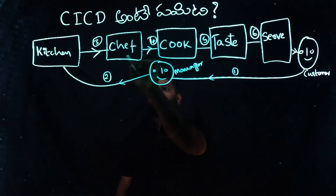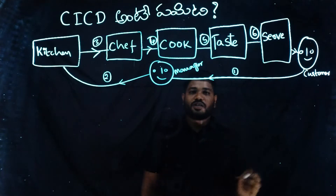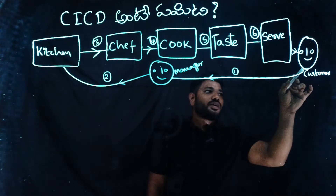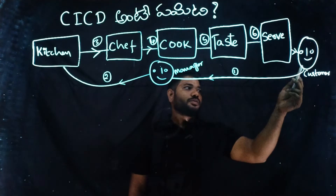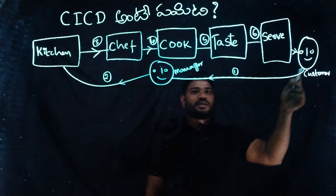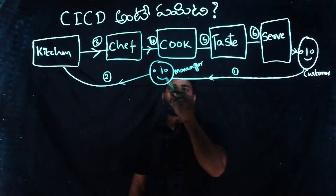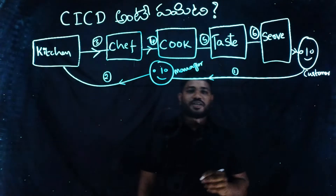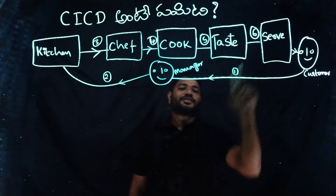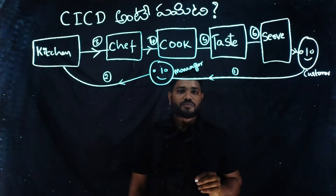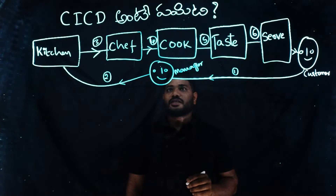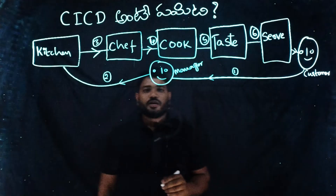The customer doesn't like it, so the chef has to redo it. Especially if the customer is not happy, you can ask another customer. What happens in this cycle is that it will run as a continuous cycle. In the first turn, we have a six-step process. If you have quick feedback in hotel management, you can complete the feedback cycle quickly.